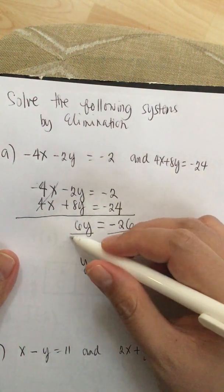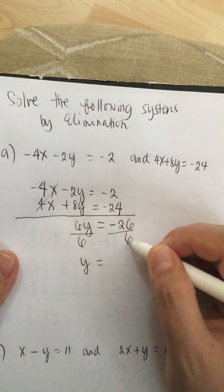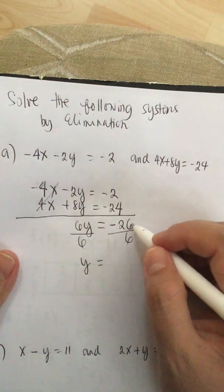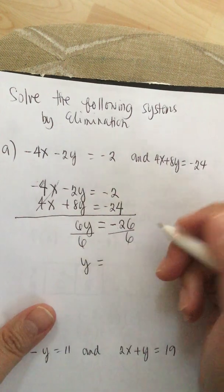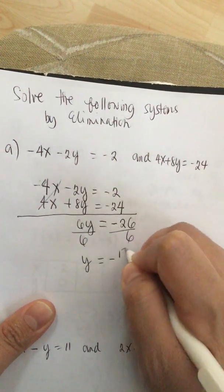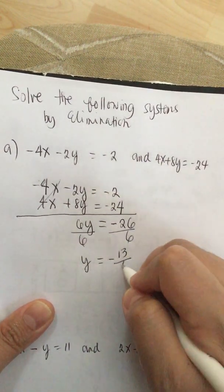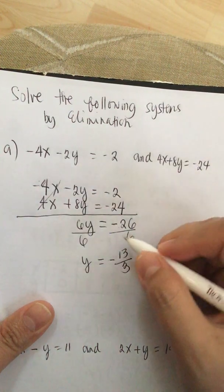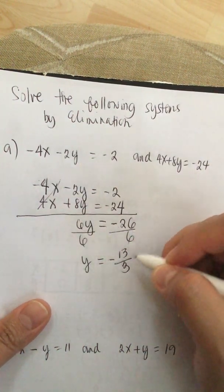And then we solve for y so we divide it by 6. And y is equal to -26 over 6, or this is also the same as -13 over 3. We reduce it by 2 and we get this.